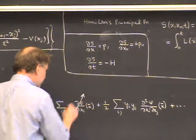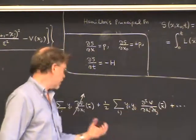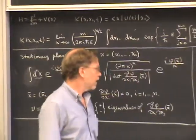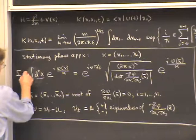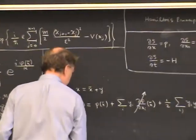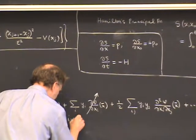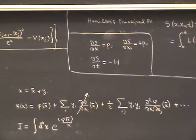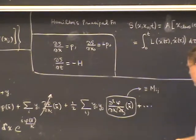The first-order term vanishes because that's the definition of the stationary phase point — where the gradient of phi is zero. So we move on to the second term because it's the first non-vanishing term after the value of phi at the stationary phase point itself. If I call this integral I, the result is that I equals the integral d^n x, with a factor e^{i phi(x-bar)/kappa} from the constant term, and a correction from second order. To make this easier to write, I'll denote the second derivative matrix of the phase evaluated at the stationary phase point as M_ij.